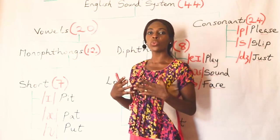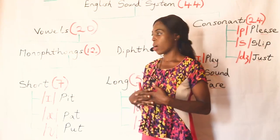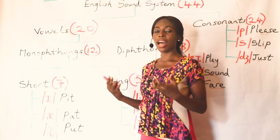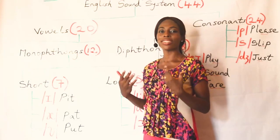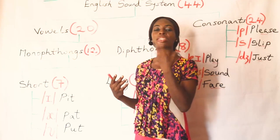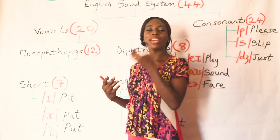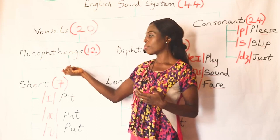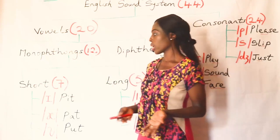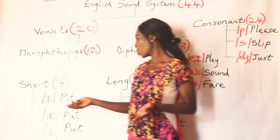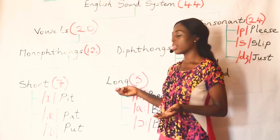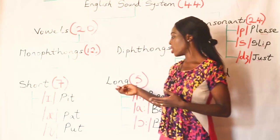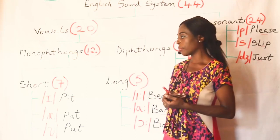Monothongs are also called pure vowels, and they are 12 in number. They are sounds of one quality — sounds produced with the tongue in one position; the tongue doesn't move. Monothongs are divided into two: we have the short monothongs and the long monothongs. The short monothongs are 7 and the long are 5.